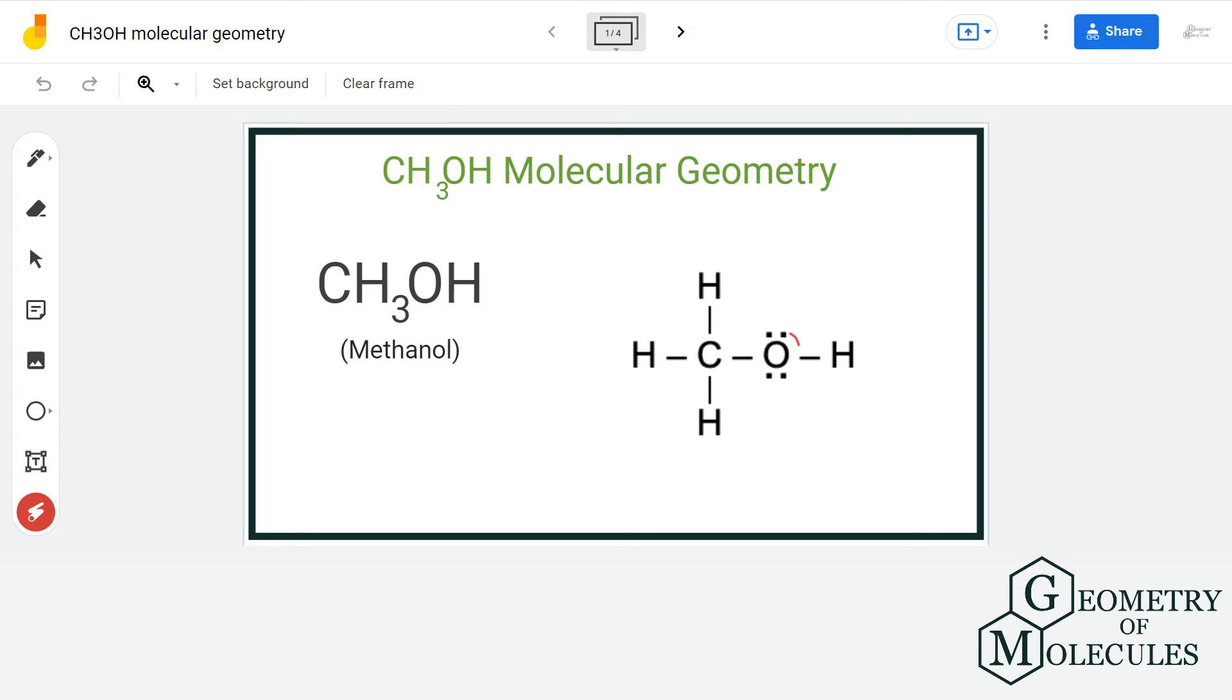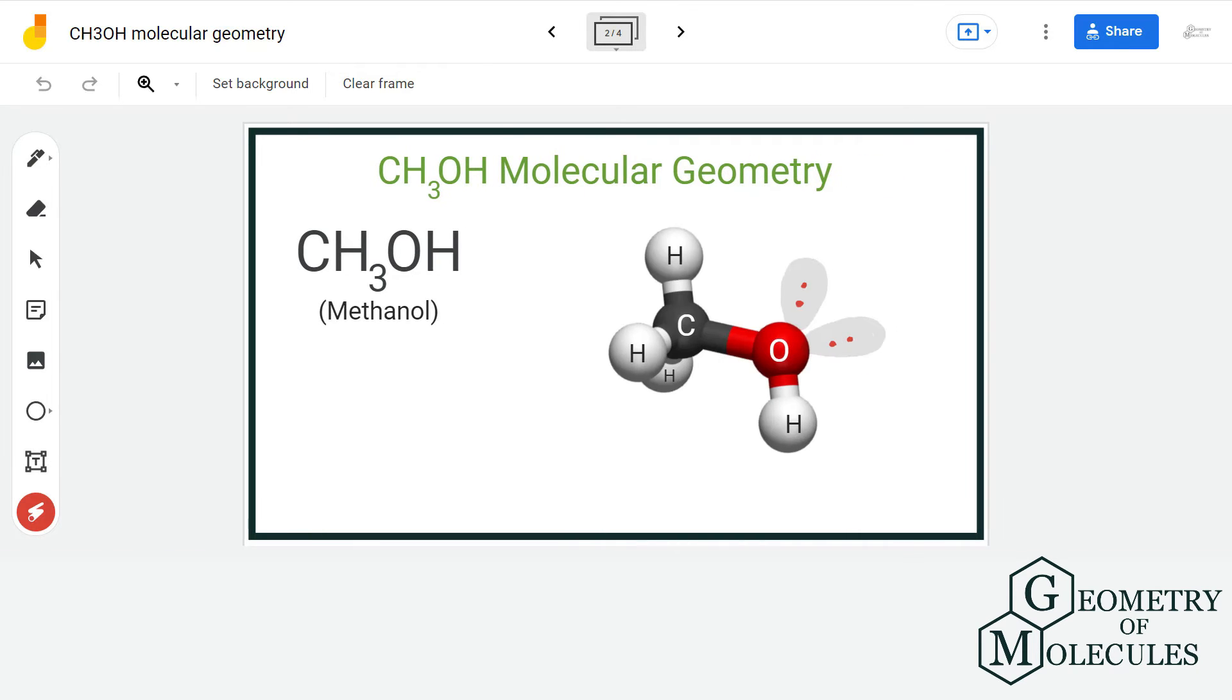Here oxygen formed two single bonds—one with hydrogen and the other with CH3. If we look at the 3D structure of this molecule, we can see that there are two geometric centers: one around the carbon atom and the other around the oxygen atom.